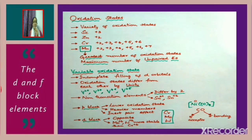Next, consider carbonyls. For example, in nickel tetracarbonyl, Ni(CO)₄, the oxidation state of nickel is 0. The reason transition metals exhibit an oxidation state of 0 in carbonyls is because the ligand carbon monoxide is a π-acceptor as well as being involved in sigma bonding.